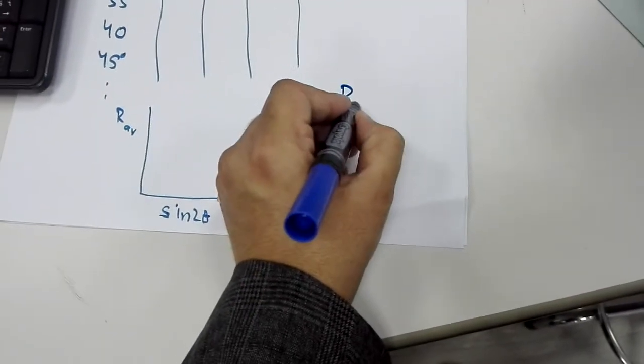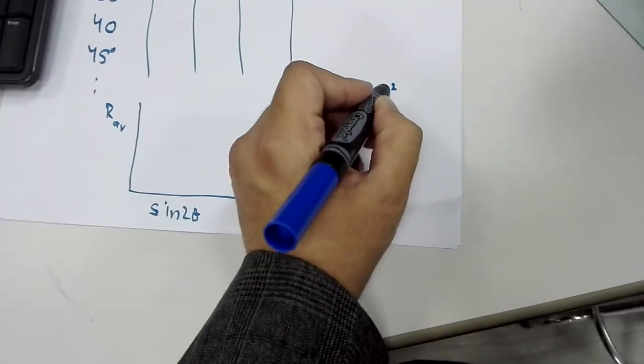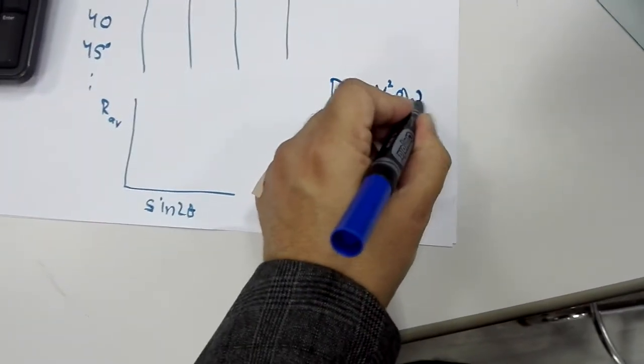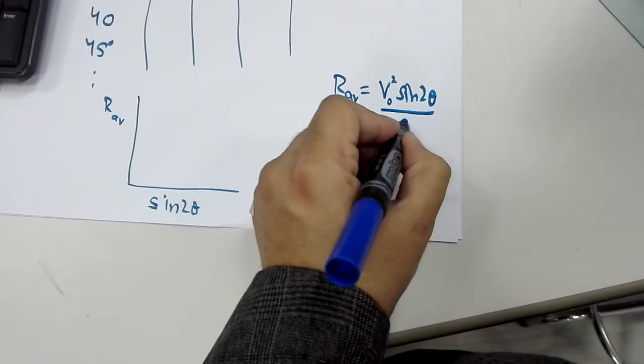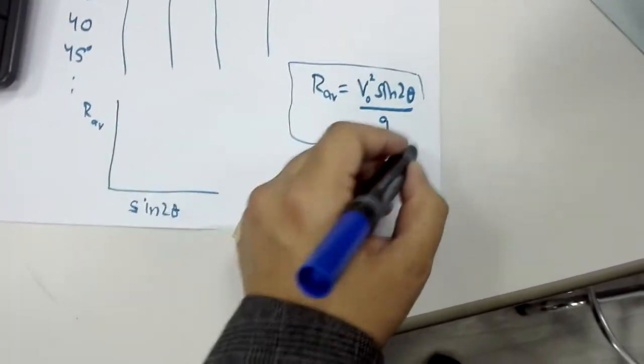And we know that the range of our projectile is related to the angle and the initial velocity by this equation. If you want to know how to derive this equation, go to my videos on projectile motion.